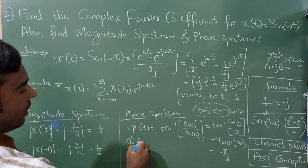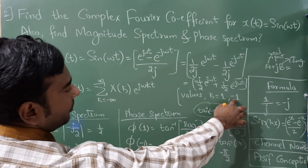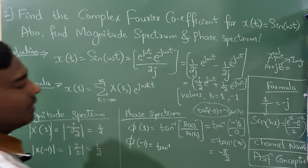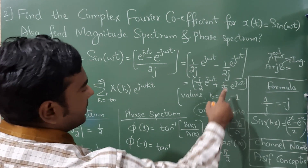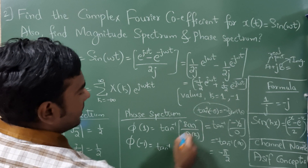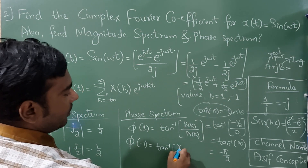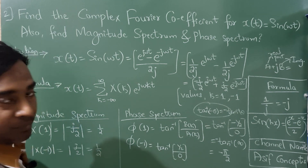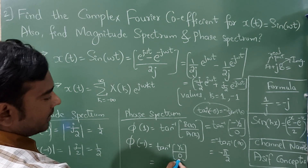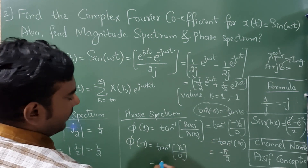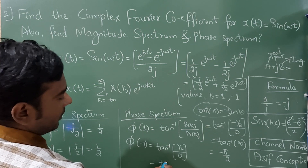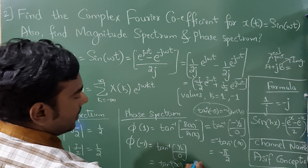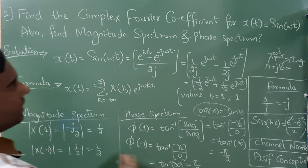For φ(-1): the imaginary part is +1/2 (because of the minus sign), and the real part is 0. Anything divided by 0 is infinity, so tan⁻¹(infinity) = π/2. Therefore φ(-1) = π/2. Now let us sketch the diagram.